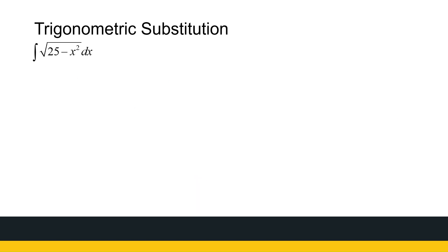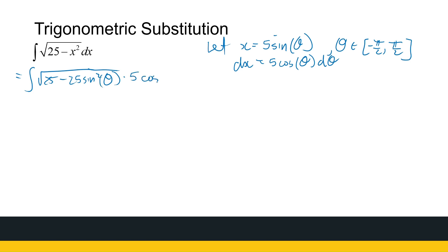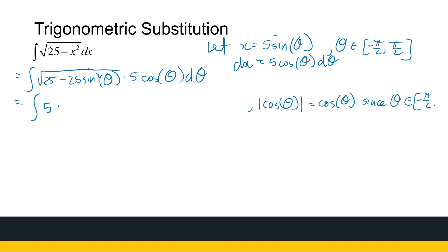The next example is very similar, but with 25 instead of 1 under the square root. We let x equal 5 sine theta, with theta between minus pi over 2 and pi over 2, so that arc sine exists and cos theta is positive. Then dx equals 5 cos theta d theta. Substituting, we get the integral of the square root of 25 minus 25 sine squared theta times 5 cos theta d theta, which simplifies to 5 times the absolute value of cos theta, and since theta is in that interval, this is just 5 cos theta.